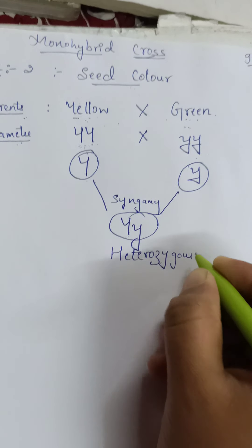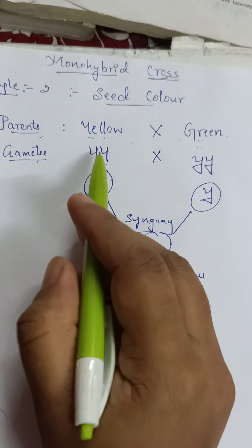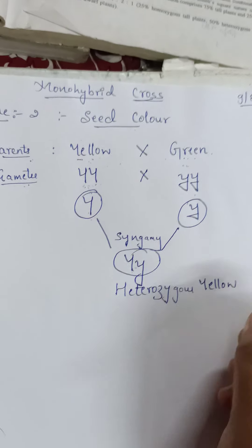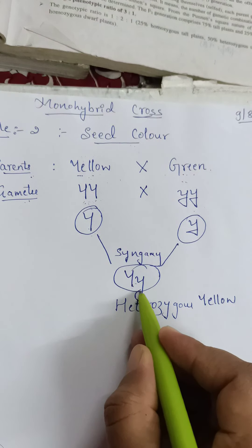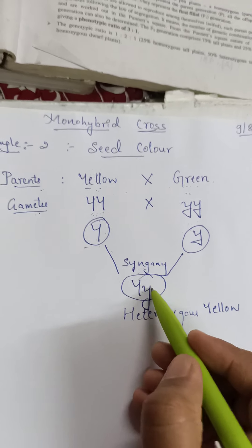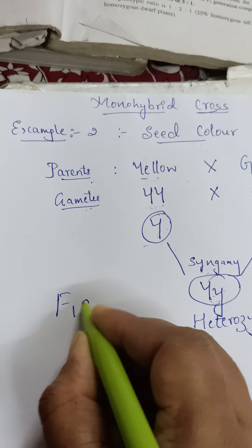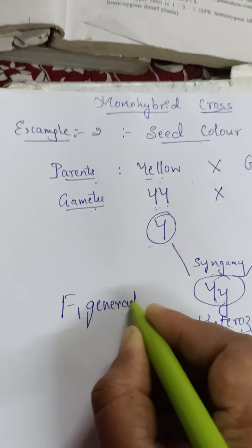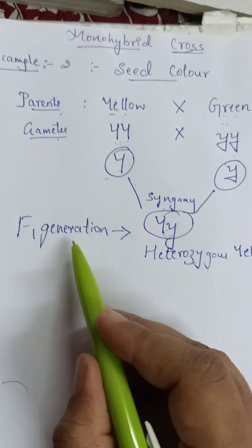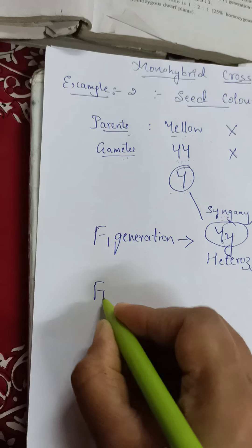This condition is called heterozygous. Due to the presence of one capital Y, the character expressed here will be yellow — the dominant character is expressed. The first generation obtained after syngamy or fertilization is called the F1 generation — the first filial generation. The F1 generation will be heterozygous yellow.